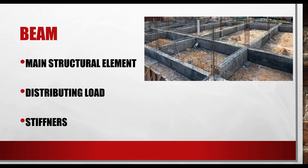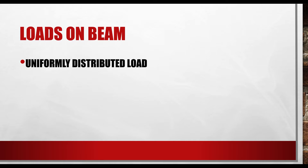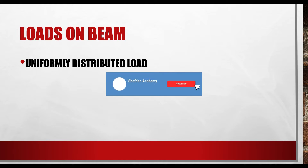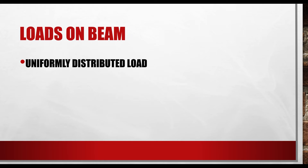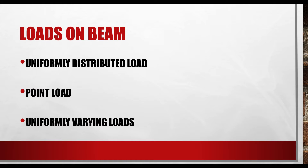We can have different forms of loadings on beams. The first form is a uniformly distributed load (UDL). We can also have a point load acting on a beam, and there are also uniformly varying loads. These are the three common forms of loads that can act on a beam, especially in building structures.